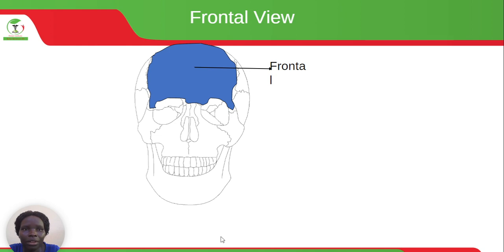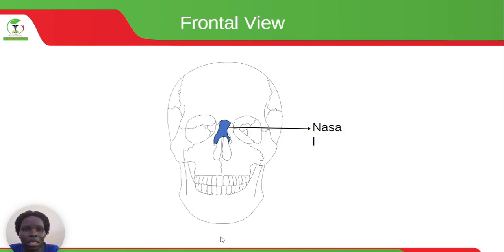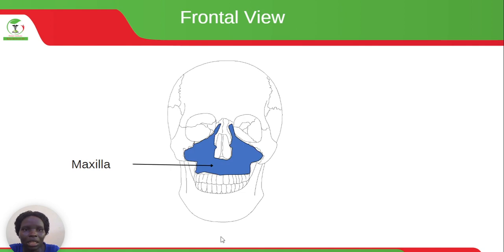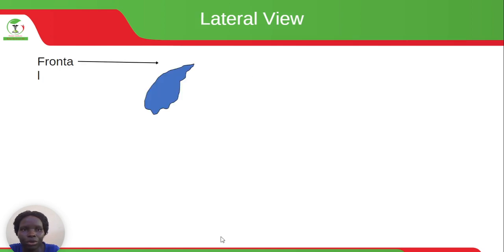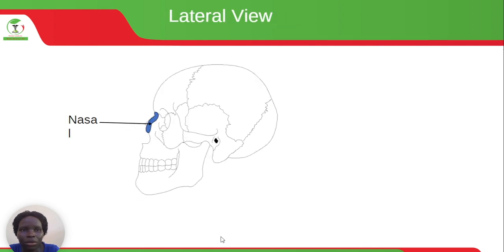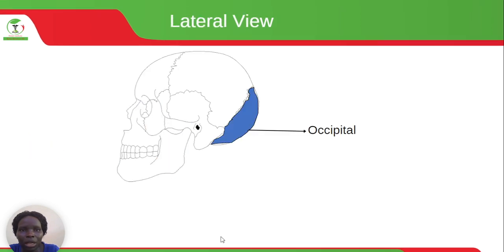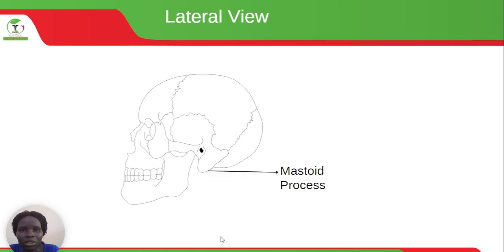We have the frontal view of the skull showing the frontal bone. Then we have the parietal bone found on both sides — left and right. The temporal bone is also paired. Then the nasal bone, the maxilla, and mandible. On the lateral view of the skull, we can also see the frontal bone, parietal bone, temporal bone, nasal bone, zygoma, maxilla, mandible, the occipital bone, and the mastoid process.